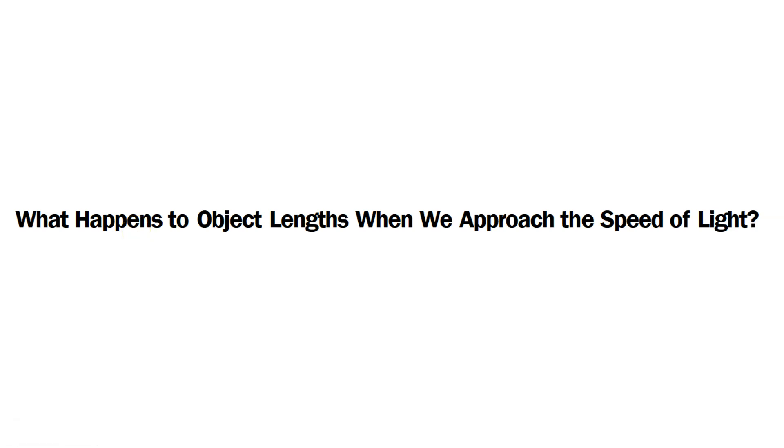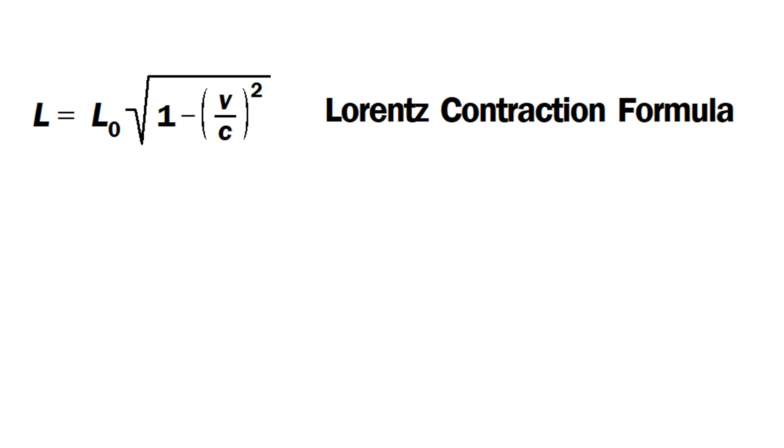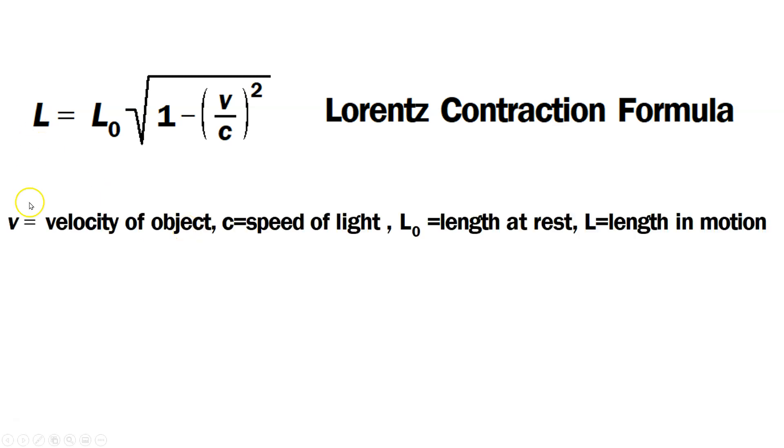Welcome friends! What happens to object lengths when we approach the speed of light? To answer this question we can use the Lorentz contraction formula. Let's define the quantities in this formula. v is the velocity of some object, c is the speed of light, L₀ is the length at rest, and L is the length in motion. The quantities are related as shown here: L equals L₀ multiplying the square root of 1 minus (v/c) squared. This is the Lorentz contraction formula.